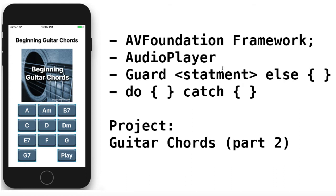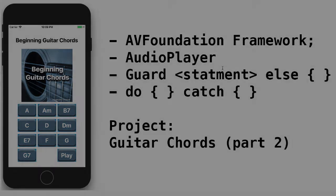In this video we'll continue working on our guitar chords project that we started in the previous video. We're going to look at using the AV Foundation framework, which will allow us to add an audio player and play different chord sounds. We'll use guard to execute a statement that might or might not work, and if it doesn't work we can do something else — usually return or exit that function. Another error-checking approach is do-catch, where we put code inside the do clause and handle errors in the catch.